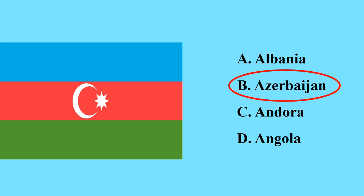This flag is Azerbaijan's flag. Azerbaijan is a transcontinental country in Asia and Europe — a small portion in the east is geographically located in Europe, while the majority of the country is geographically located in Asia. So it is a transcontinental country, and its flag looks like this.